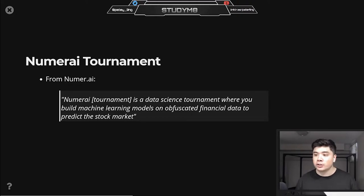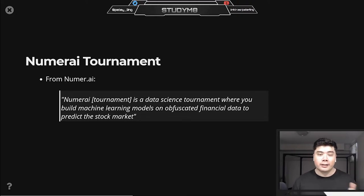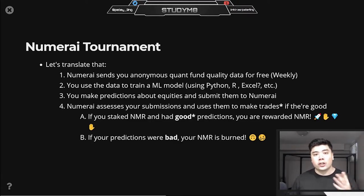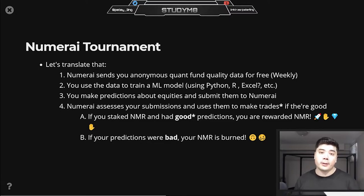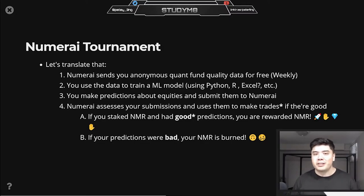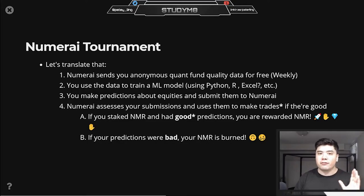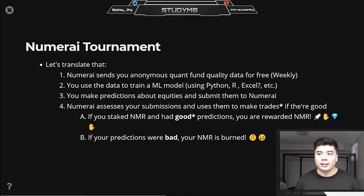Let's jump into the Numerai tournament. From their definition, the Numerai tournament is a data science tournament where you build machine learning models on obfuscated financial data to predict the stock market. I've broken that down into four steps. Step one: Numerai sends you anonymous, quant-fund-quality data for free on a weekly basis. By 'obfuscated,' all that means is that everything has been renamed so we don't know what it really maps to in the real world.